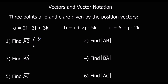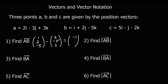So if we get b, which is (1, 2, minus 5), and we take away a, which is (2, minus 3, 3), that gives us: 1 minus 2 is negative 1; 2 take away negative 3, so 2 plus 3 is 5; and negative 5 take away 3 is negative 8. So to go from a to b, we go back 1 in the x direction, forwards 5 in the y direction, and back 8 in the z direction. So a to b is (minus 1, 5, minus 8).